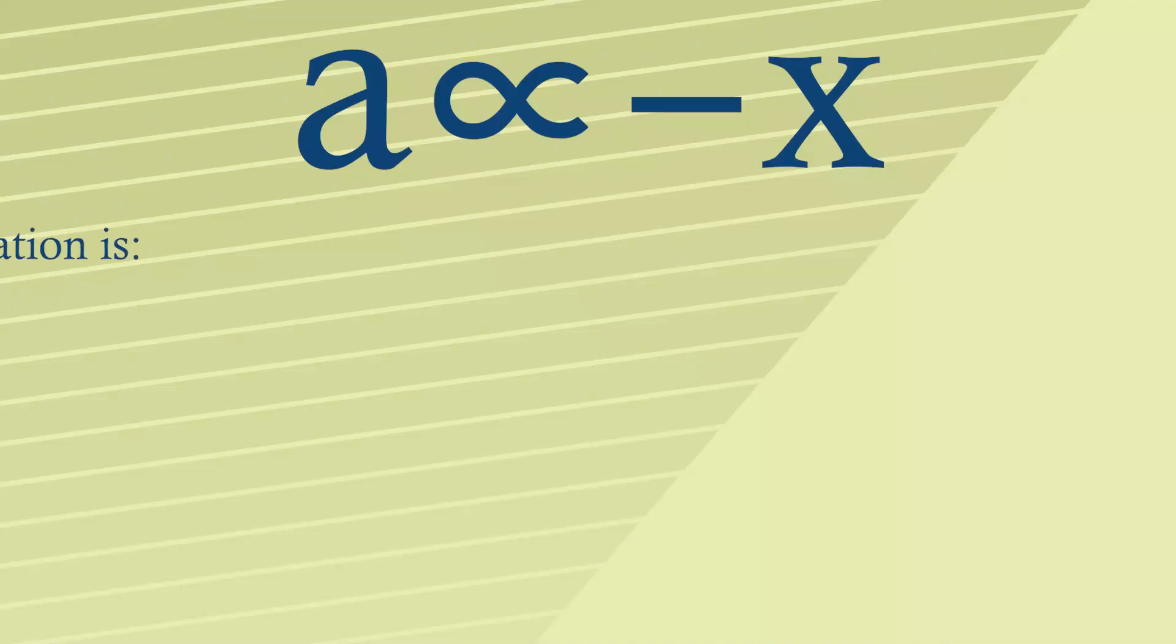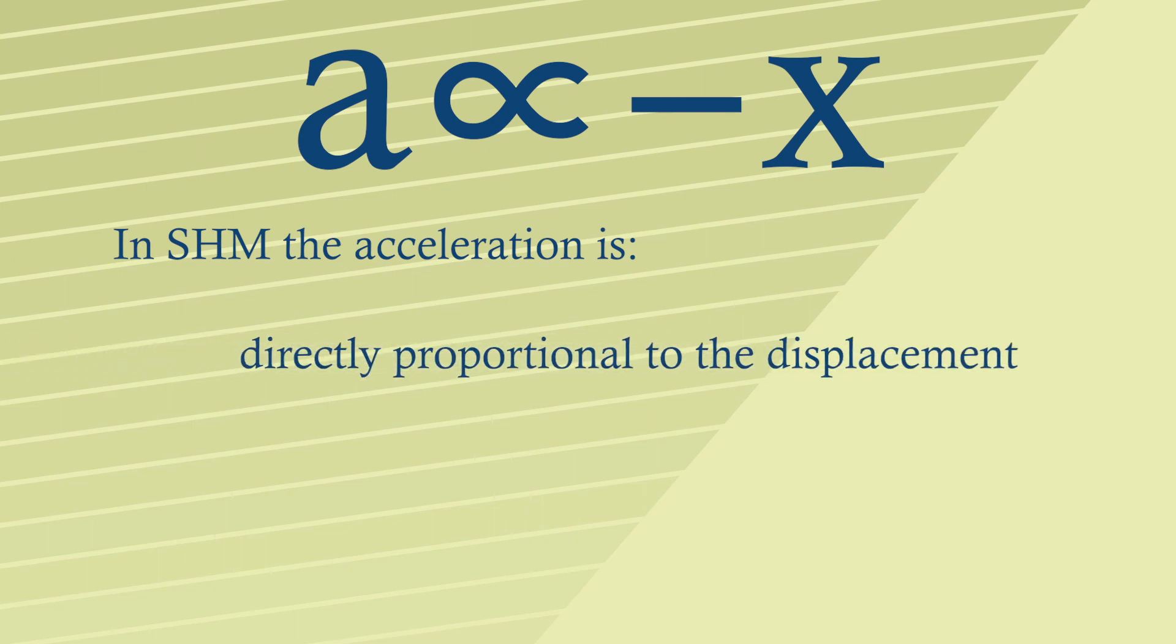Put into words we could say simple harmonic motion is when the acceleration is directly proportional to the displacement in the opposite direction of the displacement. Put another way we can say that the acceleration is always towards the centre point.